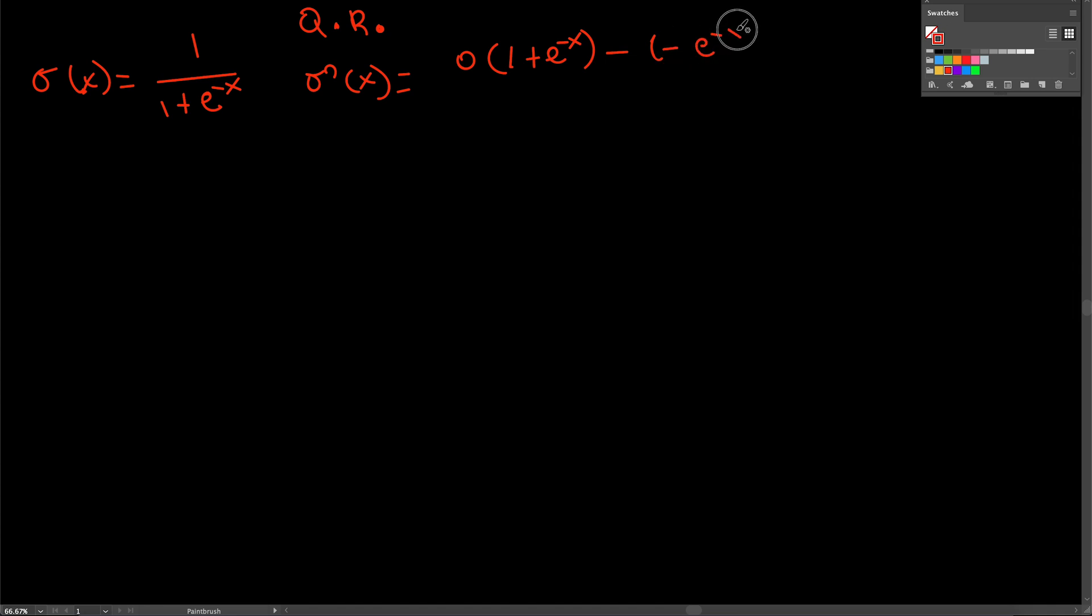And then of course that we have the numerator squared and that is just the quotient rule. Remember we're just using the quotient rule here, so this term is obviously zero.